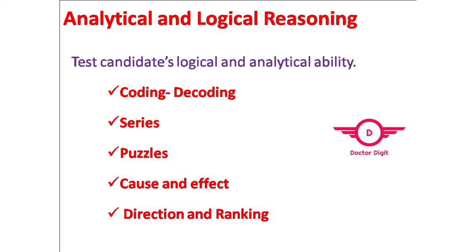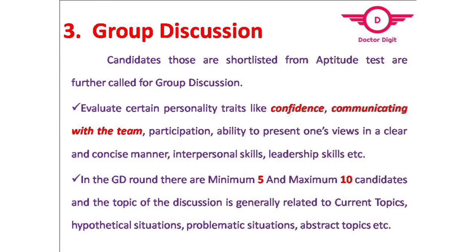The aptitude test will have two to three variations: verbal ability, analytical and logical reasoning, and quantitative aptitude. These are the areas you have to concentrate on. The third part will be group discussion. Whoever clears the aptitude test will be called for a group discussion. It will be a minimum of five to ten candidates in your group, and they will start discussing about current topics, hypothetical situations, problematic situations, and abstract topics. This is to test your communication skills.